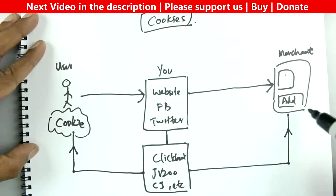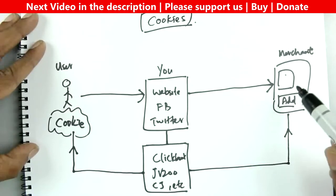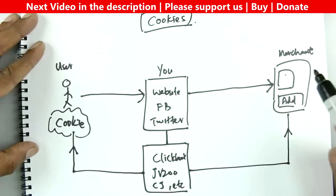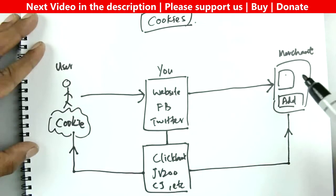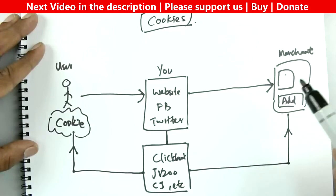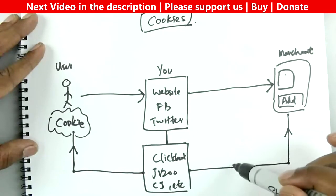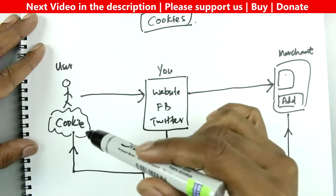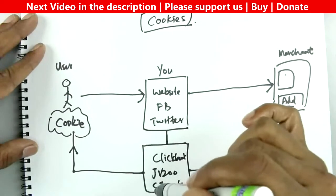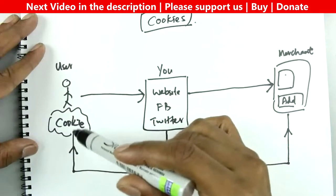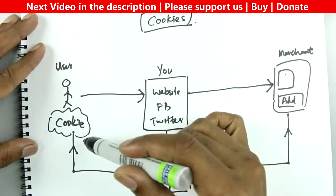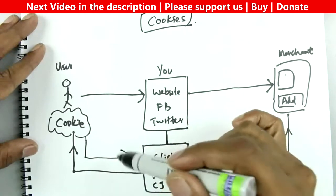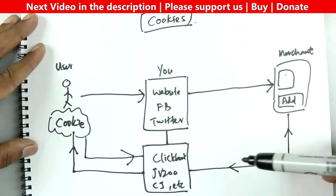Once the cookie is placed, the affiliate network redirects the user to the merchant site. When the user checks out and buys the product, there is a code given by the affiliate platform to the merchant that must be placed on the thank you page or checkout page. When the user completes payment and reaches the checkout page, the merchant site communicates back to the affiliate platform, which then checks for the cookie on the user's computer. If no cookie exists, the transaction is ignored.